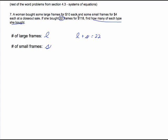The other equation has to do with the cost. Each large one costs $10, so 10L represents how much the large frames would cost her. And each small frame costs $4, so 4S would represent how much each small one would cost her. Altogether, it's $118.